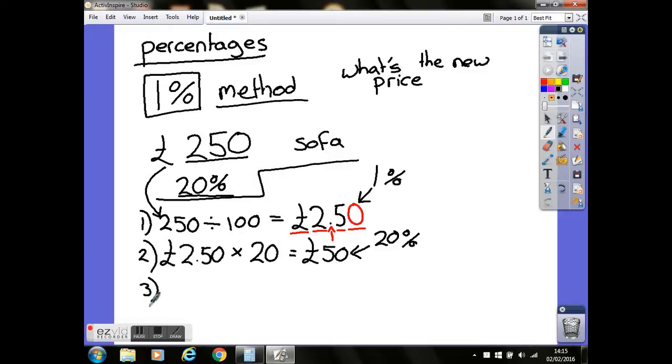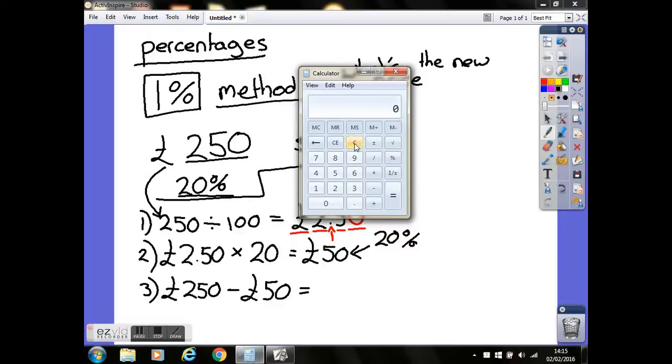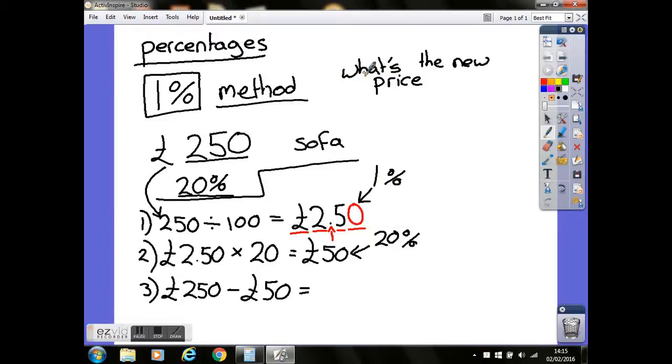The third step would be to have your original amount of £250 and subtract, because it's a discount or decrease. We can subtract our 20%, which we've already calculated to be £50. That shows us that our new price would be £200.